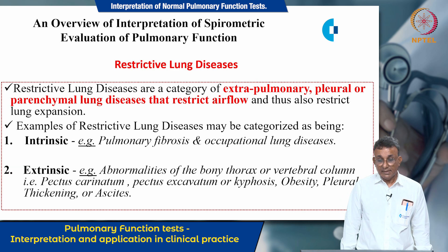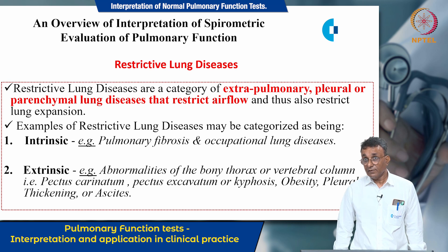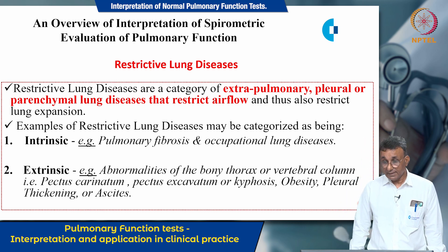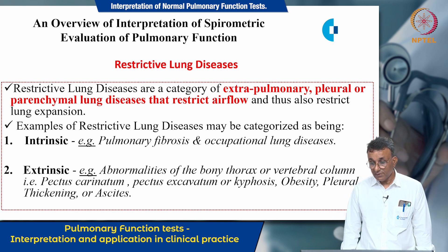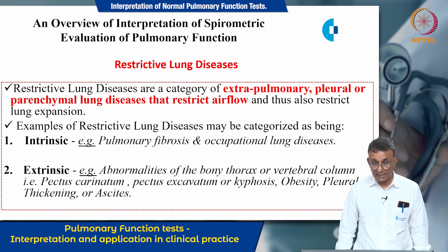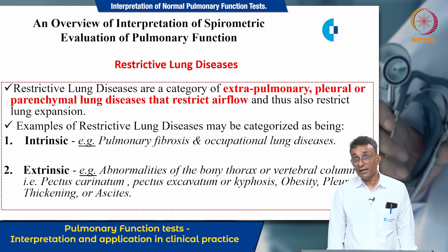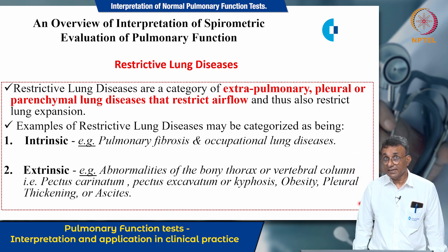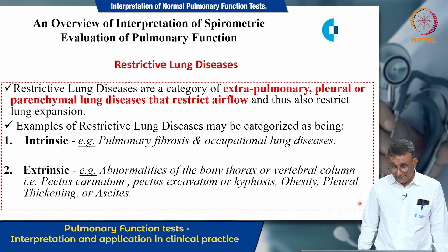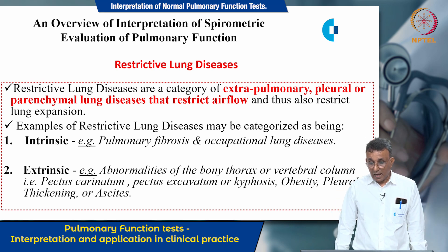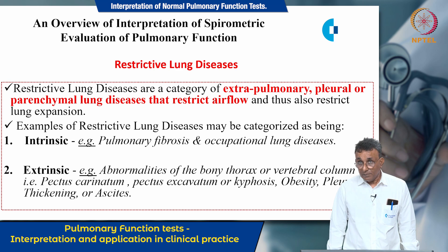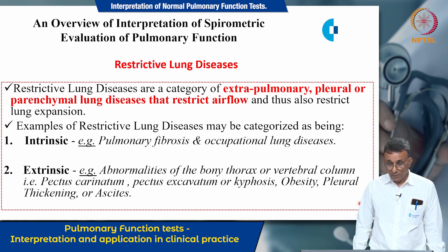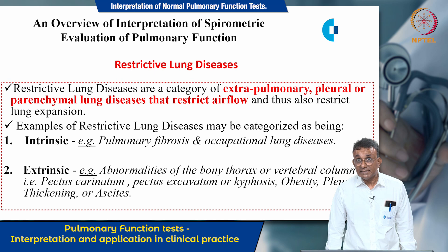Restrictive lung diseases are a category of extra-pulmonary, pleural, or parenchymal lung disorders that restrict airflow and lung expansion. Examples can be categorized as intrinsic or extrinsic. Pulmonary fibrosis and occupational lung disorders are intrinsic examples. Extrinsic restrictive disorders include abnormalities of the bony thorax or vertebral column, pectus carinatum, pectus excavatum, kyphosis, obesity, pleural thickening, and ascites.